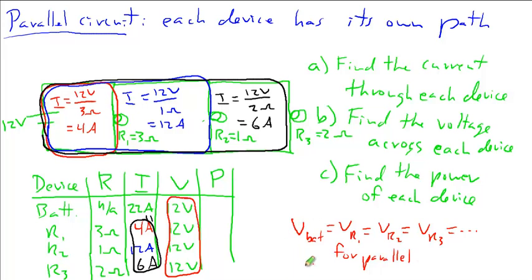Another thing we can notice here is that the current in the battery, I battery, equals I through resistor 1, plus I current through resistor 2, plus current I through resistor 3, plus dot dot dot for any other resistors that are added in. These are two main equations for parallel circuits.